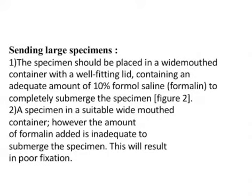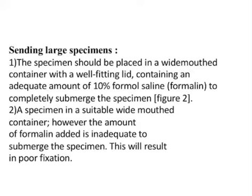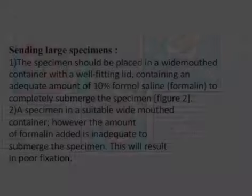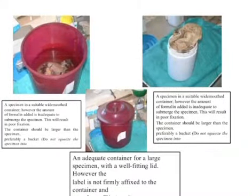For large specimens, the specimen should be placed in a wide-mouth container with a well-fitting lid containing 10% formalin and completely submerged. The amount of formalin must be adequate — if we keep our specimen in a container that is too small, the tissue will not be properly fixed and our result may be affected. These pictures show sample collection: in a large bucket, fixation will be proper when the specimen is fully submerged in a wide-mouth container with formalin and properly sealed.